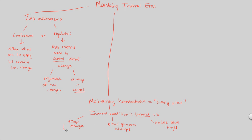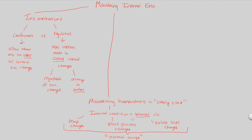When external changes happen, the internal environment recognizes something has changed and wants to get back to normal — back to what we call the normal range. For example, body temperature is normally around 98.6°F. When you work out, your body temperature rises because you need more oxygen and give off more heat, but your body tries to stay within a certain normal range.